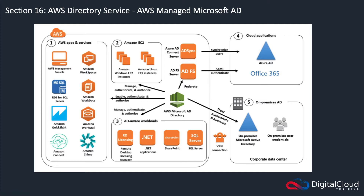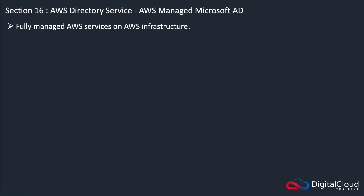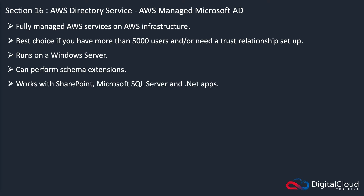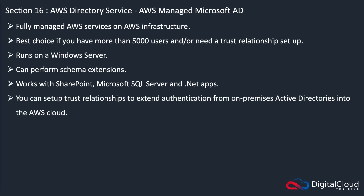AWS Microsoft AD is a fully managed AWS service on AWS infrastructure. It's the best choice if you have more than 5,000 users or you need to set up a trust relationship. It runs on Windows Server, and you can perform things like schema extensions. It works with SharePoint, SQL Server, .NET apps, and lots more. You can set up trust relationships to extend authentication from on-premises Active Directories into the AWS cloud.